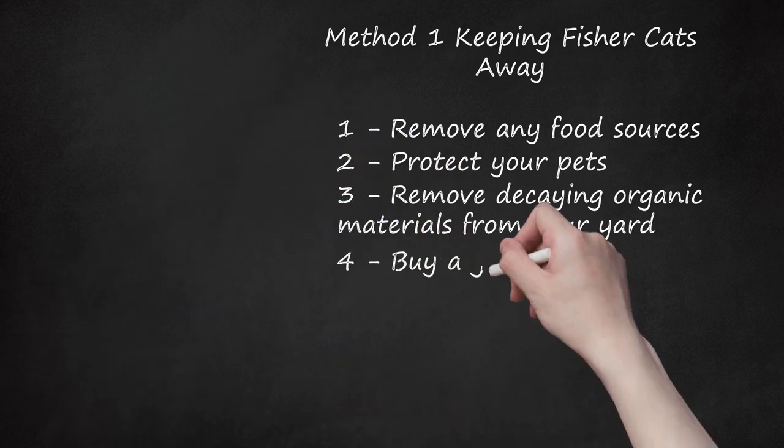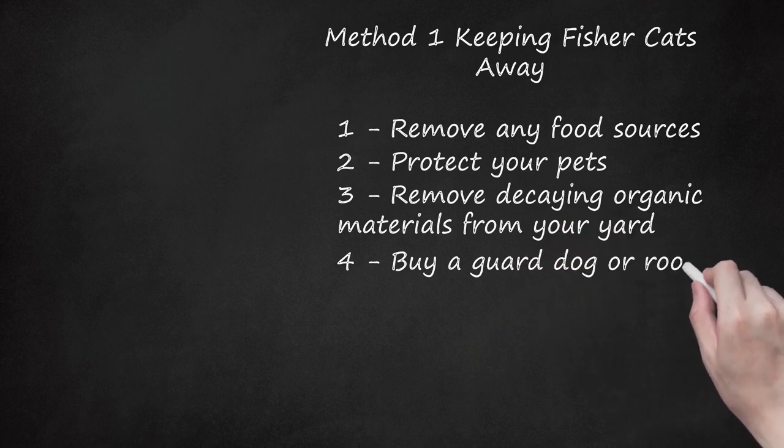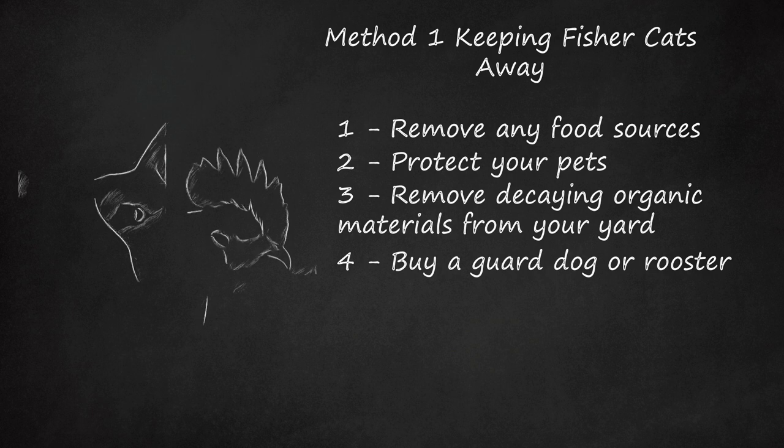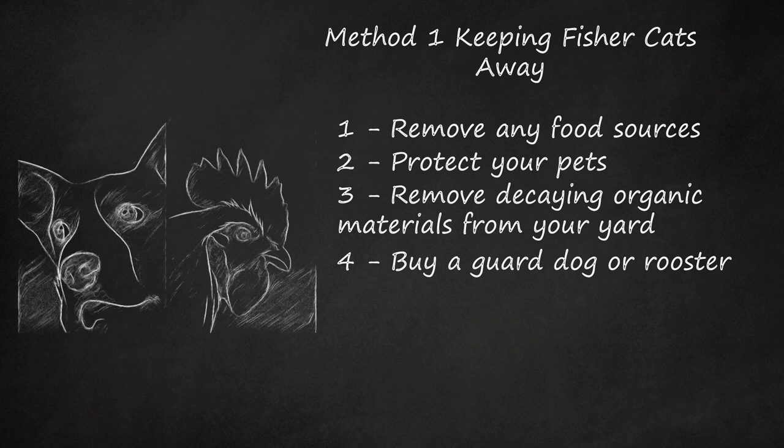Step 4: Buy a guard dog or rooster. One way to protect your yard from fisher cats is to have a large guard dog to keep them at bay. Some larger dogs will scare off fisher cats, although make sure to get the right breed because fisher cats prey on smaller pets. A large farm dog will spot many predators, bark, and chase them off. Make sure though, that you don't choose a dog that itself might attack the chickens instead of guarding them.